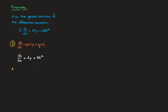We move on to step two. In this step, we need to find the integrating factor. We usually call the integrating factor capital I(x), and to find it, we use the fact that it's equal to e raised to the integral of p(x), where p(x) is the function multiplying the y inside our differential equation. So in this example, p(x) is just four.